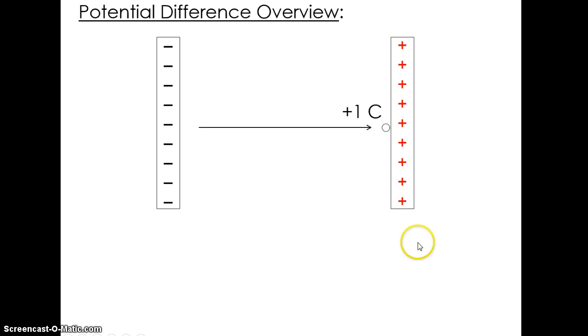When it gets to the positive plate, it is lifted as high as it can go from the negative plate. Let's say we've given it five joules of potential energy. What happens if we repeat that experiment, but instead of using one coulomb, we use a bigger charge? Does it gain five joules as well, or does it gain more potential energy?